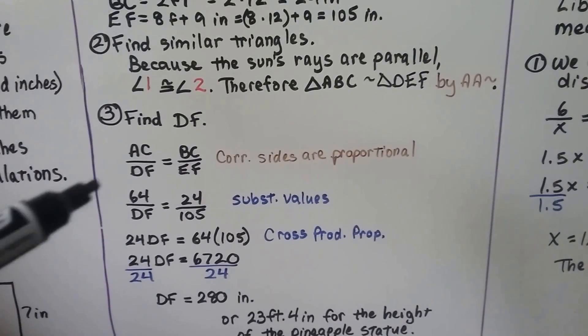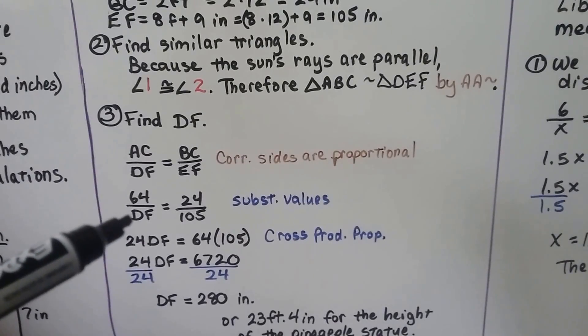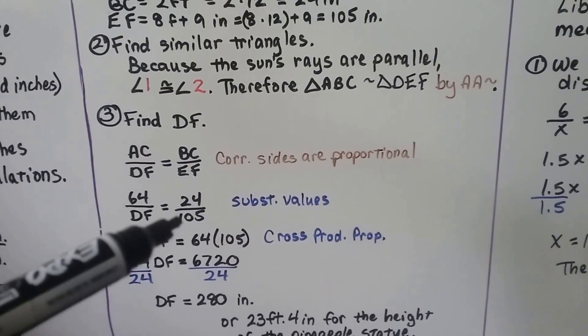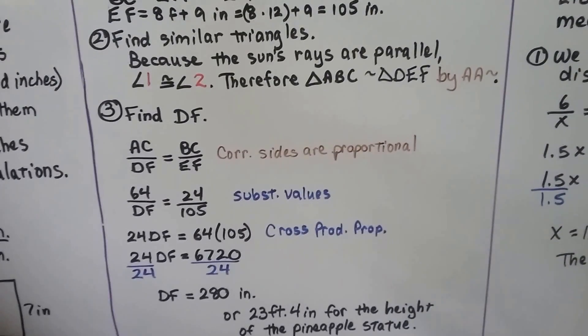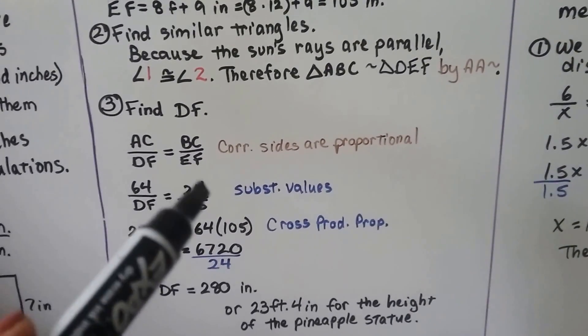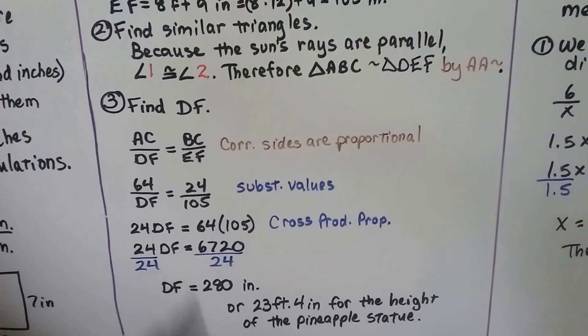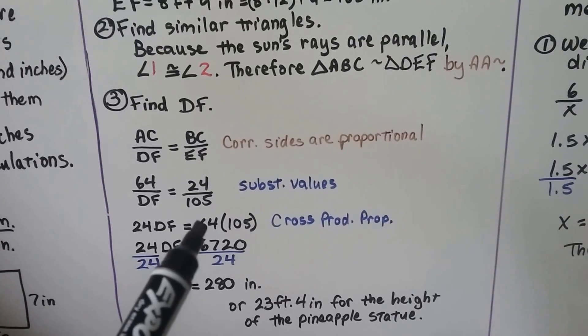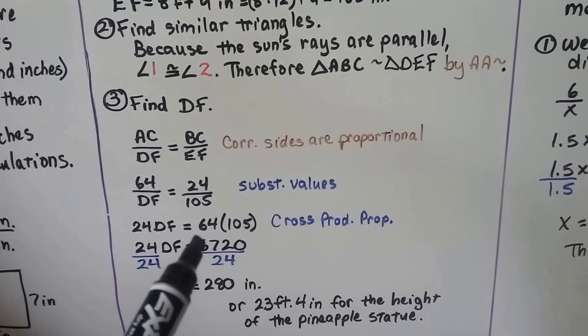We substitute in the values: her height over whatever the height of the pineapple is, over her shadow, over the pineapple's shadow. We can do cross products. We have 24 times DF is equal to 64 times 105. 64 times 105 is 6720.